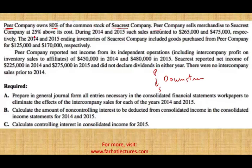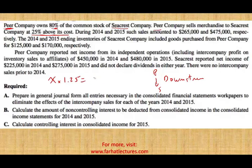P Company sells to S Company at 25% above cost. Whatever P Company's cost is, they multiply it by 1.25 — that's their sales to S Company. During 2014 and 2015, such sales amounted to 265,000 and 475,000 respectively.